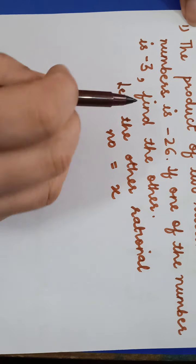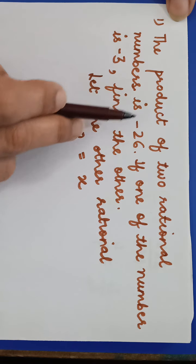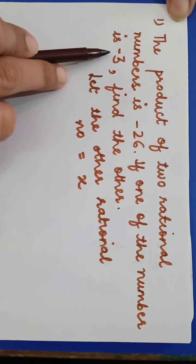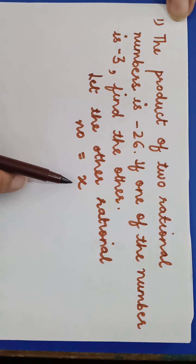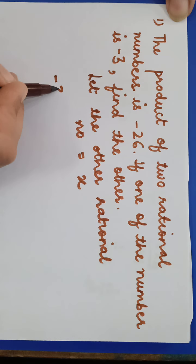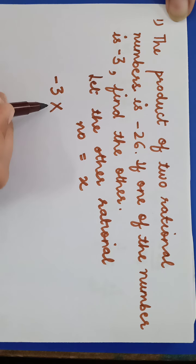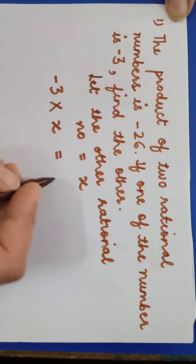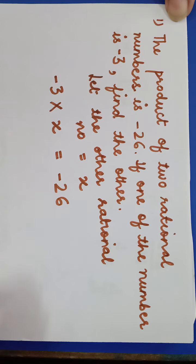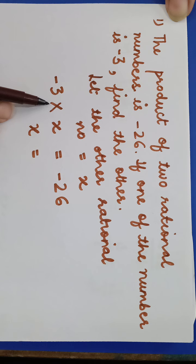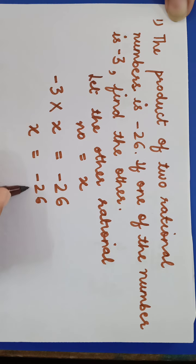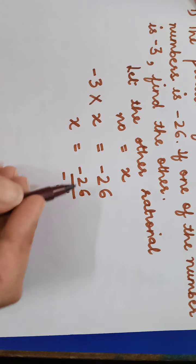The product means multiplication. We know one number is minus 3 and the other we have let as x. So minus 3 multiplied by x is equal to minus 26, which is the product given in the question. So x equals minus 26 divided by minus 3 — the minus 3 transposes to the right-hand side as division.